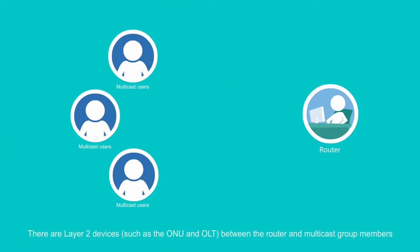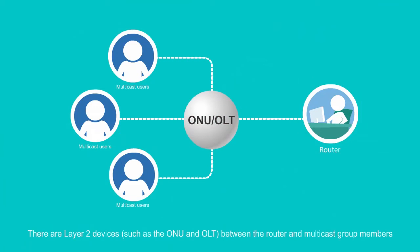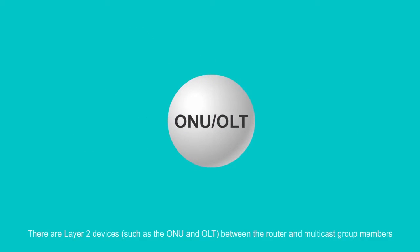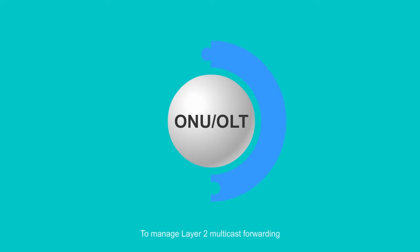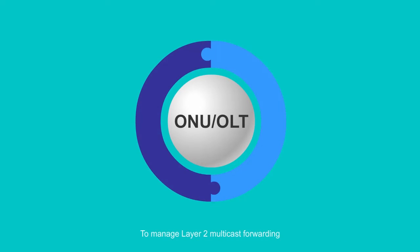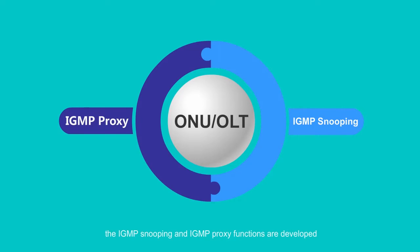There are Layer 2 devices such as the ONU and OLT between the router and multicast group members. To manage Layer 2 multicast forwarding, the IGMP snooping and IGMP proxy functions are developed.